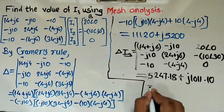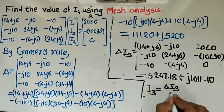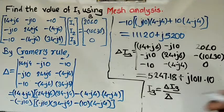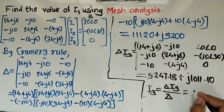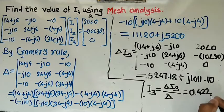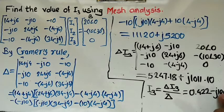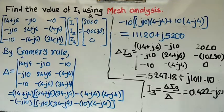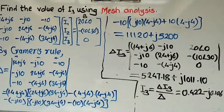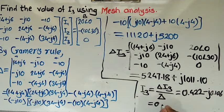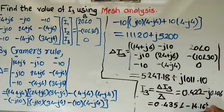By Cramer's rule, I3 = ΔI3 / Δ. Substituting the values gives I3 = 0.422 − j0.106. Converting to polar form, the final answer is I3 = 0.435∠−14.16°. The unit is amperes. This is the exact value of I3 in polar form.